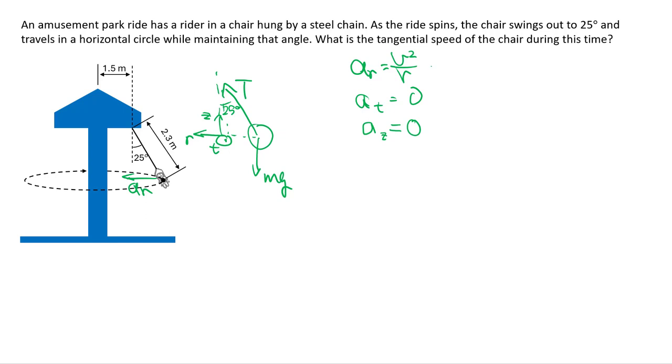One thing to note here, a little tricky with this problem, is that this R here is not simply 1.5, right? The R here is the radius of the circular path, which is going to be 1.5 plus whatever this distance is. So R here is equal to 1.5 meter plus 2.3 meter sine 25 degrees. There's no more significance here, so I can just punch this out as a number and get that.